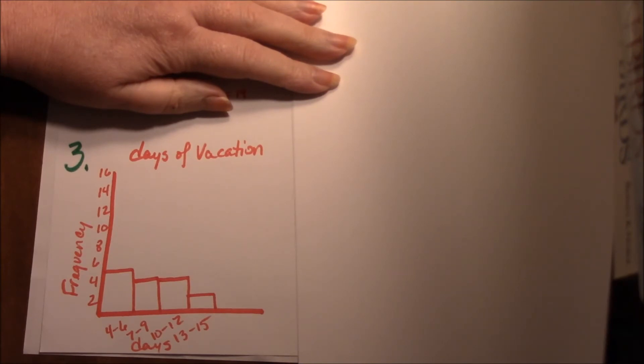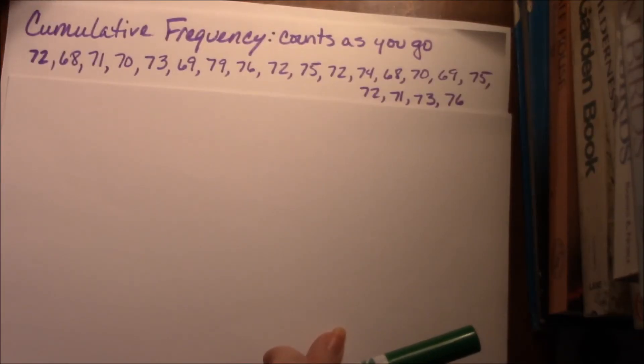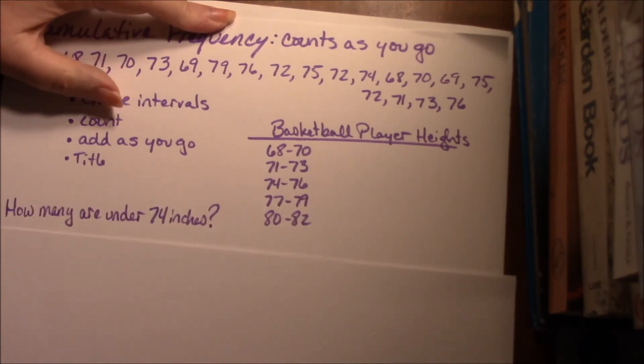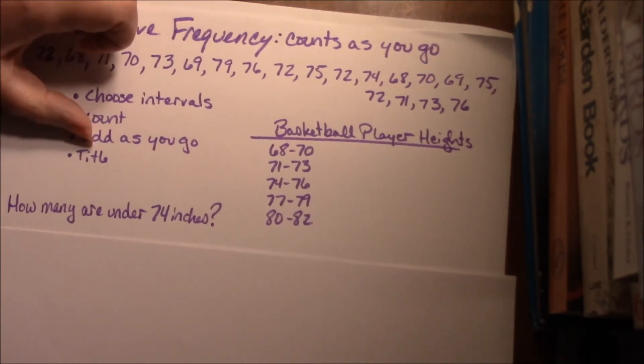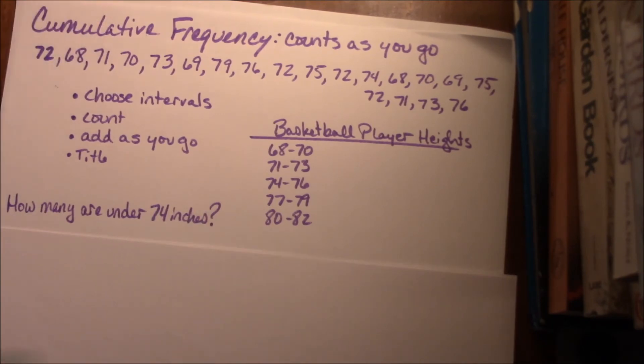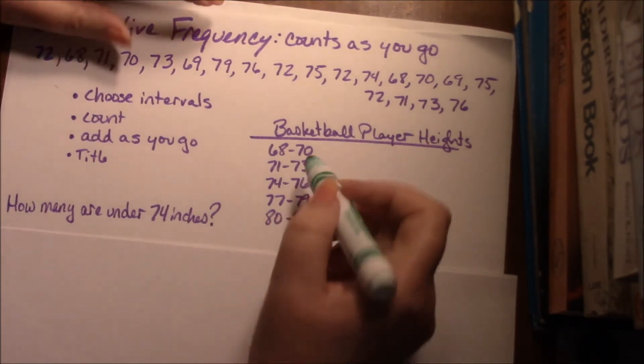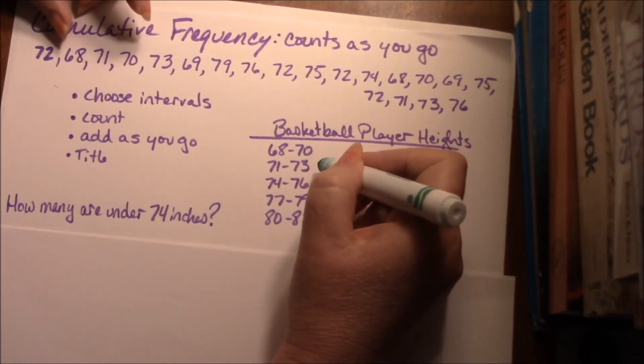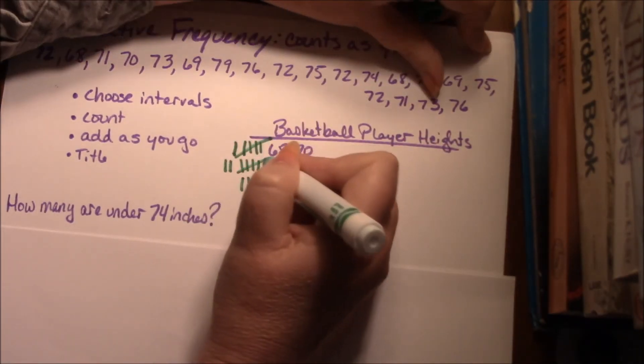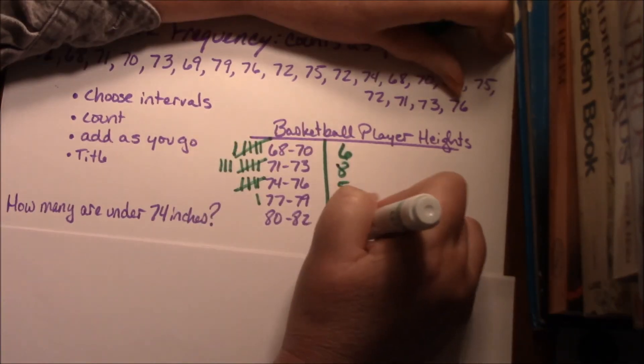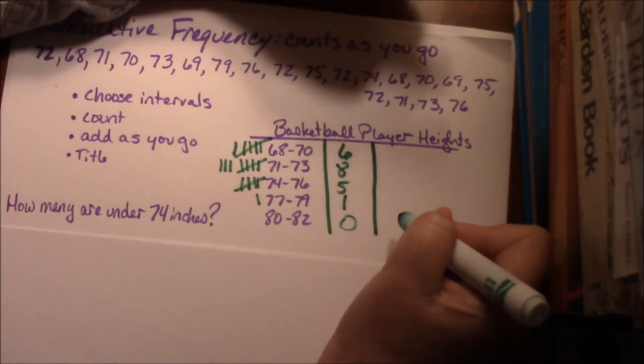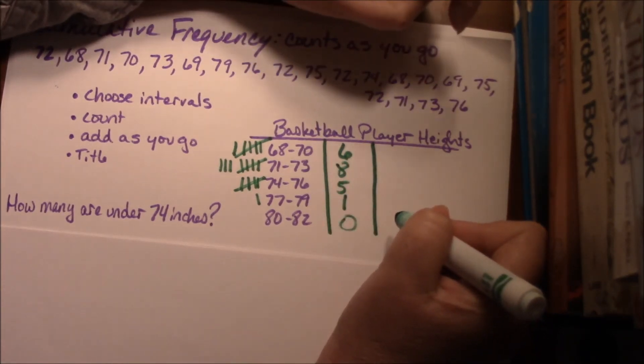Please ask if you have any questions. A cumulative frequency table counts as you go. So again, they give you a huge list and again you choose the intervals, but you count and you add them as you go. Yes, you still have a title and all of that. So we've got our same intervals and we're going to go ahead and count them again.